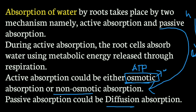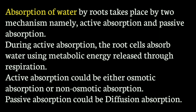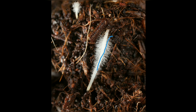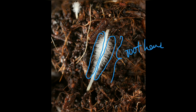Now let's explain with diagrams. Here we have the soil, and this white or brownish - sometimes reddish - structure is the root. There is a main root and smaller roots. The thread-like structures you can see are root hairs. The zone with root hairs is called the root hair zone. Water is absorbed here and supplied further up to the plant.